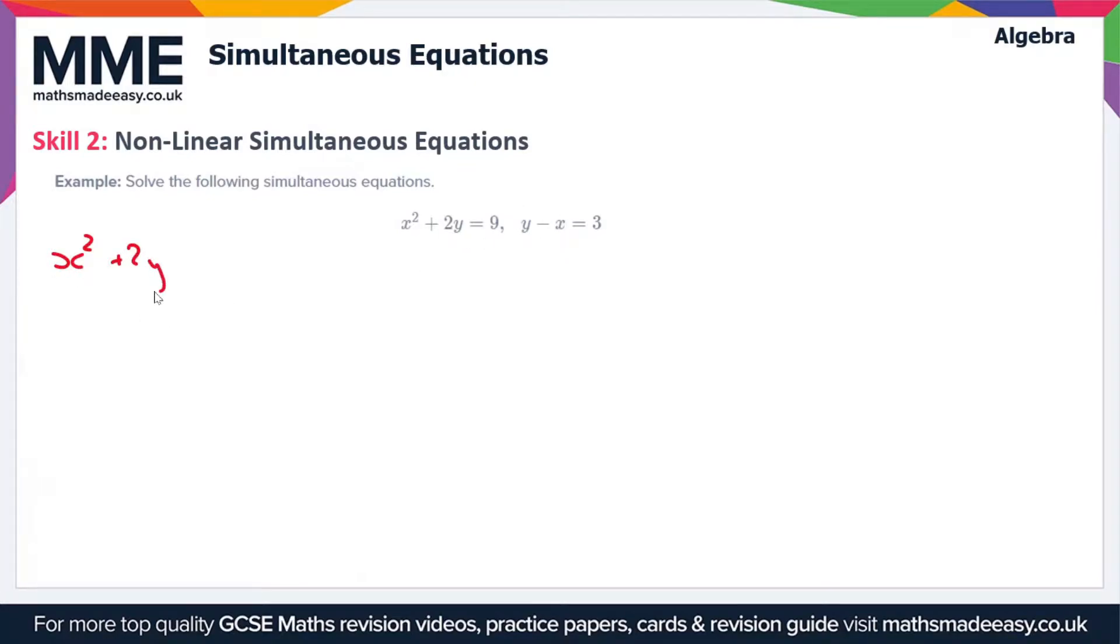Let's rewrite them. First, we have x² + 2y = 9 and y - x = 3. Now, because this is a non-linear equation, we can't use the method from the first video, which was elimination. Instead, we're going to have to substitute the linear equation into the non-linear equation and work out the values of x.